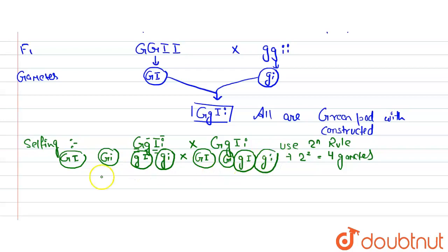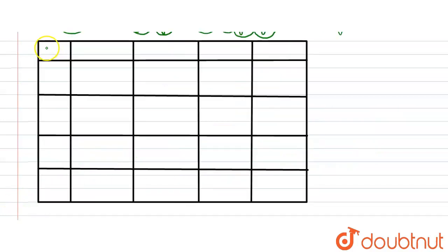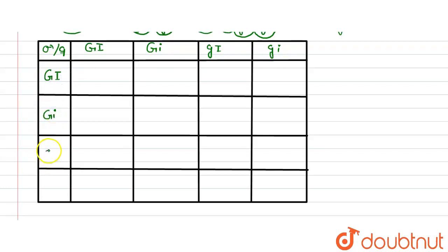Using the Punnett square, we have to identify the genotypic combinations, using one set as male and one as female. One side has: capital G capital I, capital G small i, small g capital I, and small g small i. The other side similarly has the same four gametes.